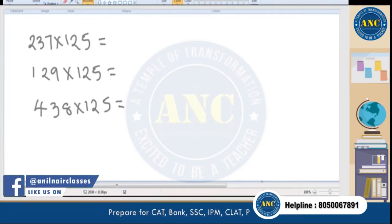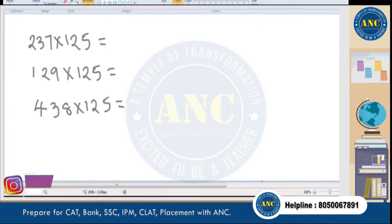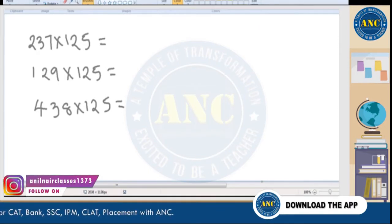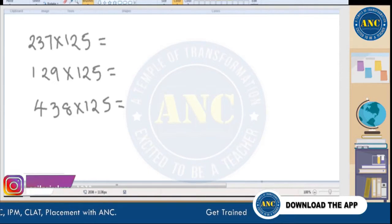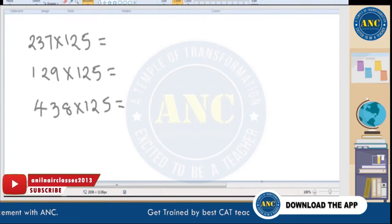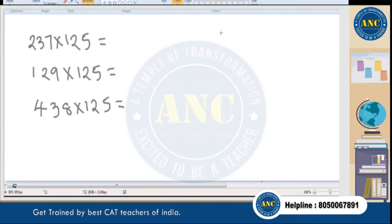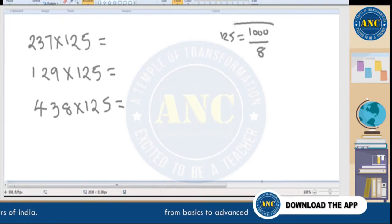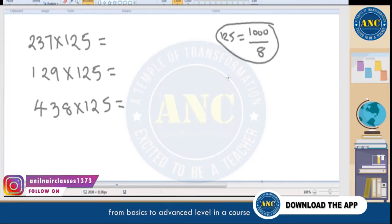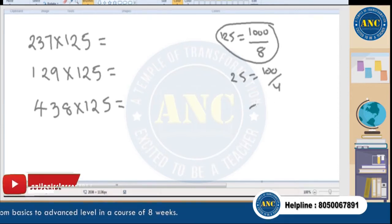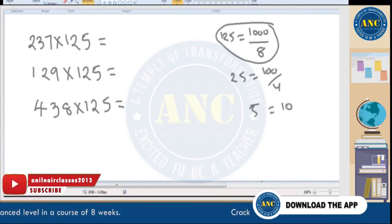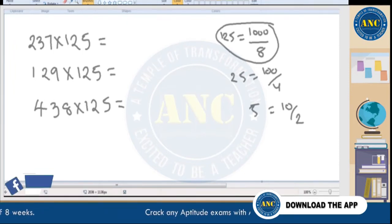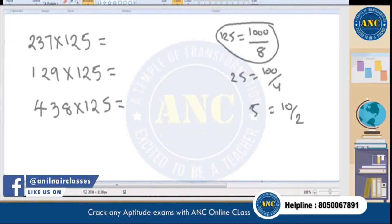For those who just joined: why divide by 8? Because 125 can be written as 1000/8. Similarly, 25 was written as 100/4, and 5 was written as 10/2. So 125 = 1000/8 — that's the reason for dividing by 8.